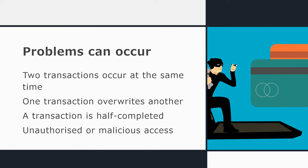There are a number of problems that can occur with transaction processing. For example, two transactions could occur at the same time and affect the database in different ways. If there's only one ticket left and two people apply to buy it at exactly the same time, how is that resolved? A problem that can arise is that one transaction could overwrite a previous transaction — so I've bought the ticket, then you log on moments later and buy it, overwriting my purchase.